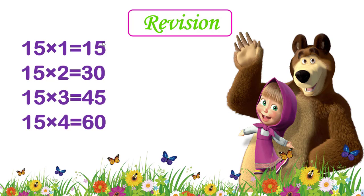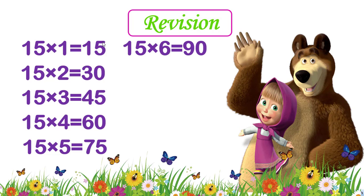15 fours are 60. 15 fives are 75. 15 sixes are 90. 15 sevens are 105.